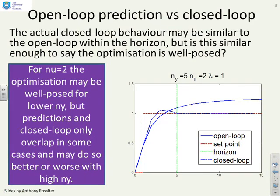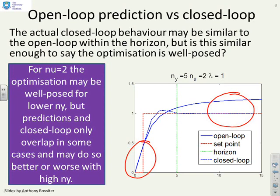If we look at the open loop prediction versus the closed loop behaviour — and if you remember the argument was that if the predictions aren't close to the closed loop behaviour that results, then your optimization is not well posed or meaningful, because it means you keep changing your mind every sample. Now in this case with ny equals 5 there is quite a big difference. The reason you normally get away with it with predictive control is that if the first move, or indeed the first two moves, are nearly the same, then you find the feedback tends to save you. But that doesn't mean your optimization was well posed — it means you've had a bit of luck rather than doing a good design.